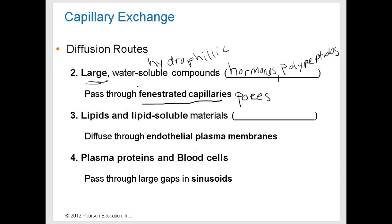Lipids and lipid-soluble materials — for example, respiratory gases like oxygen and CO2 — are lipophilic. These compounds are perfectly fine going through the plasma membrane of endothelial cells. They like lipids, so they can go right through the phospholipid bilayer. Lipid-soluble materials like oxygen and CO2 will diffuse in and out of the bloodstream by going straight through the endothelial cells. There aren't any clefts or gaps needed for them to diffuse.